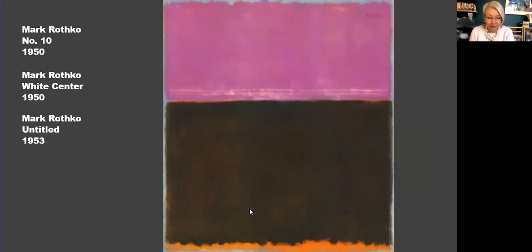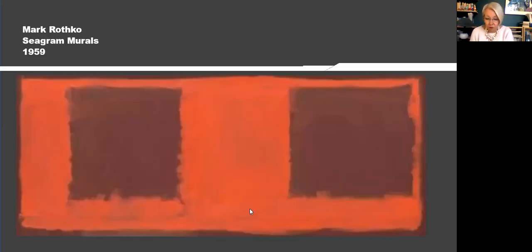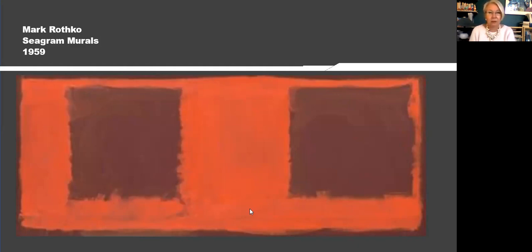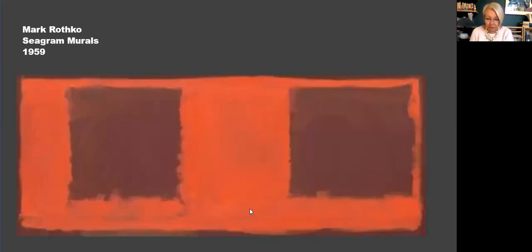By 1950, he'd reduced the number of floating rectangles to two, three, or four aligned vertically against a colored ground. This is his signature style, and he worked in that format almost exclusively, achieving an astonishing range of atmospheres and moods by varying the color and the tones. His work begins to darken in the 1950s, subsequent to his work on the disastrous mural commission for the Four Seasons Restaurant in the Seagram Building in New York City. They had space for only seven murals, but Rothko eventually did 30, in horizontal rather than his usual vertical format to fit the restaurant setting. He was always uncomfortable with the elite, and told an interviewer that his goal in this commission was to create something that 'will ruin the appetite of every son of a bitch who ever eats in that room.'